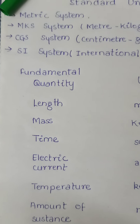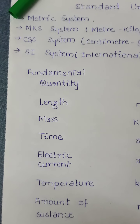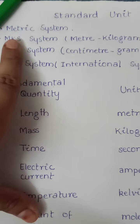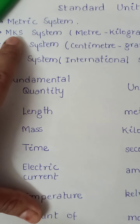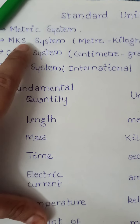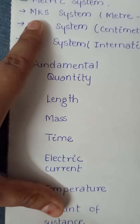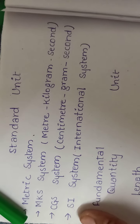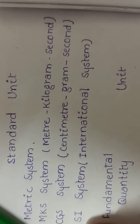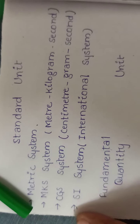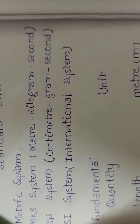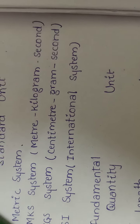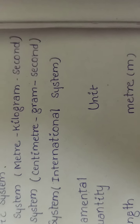Another system is the MKS and CGS system. In MKS: M stands for meter, K stands for kilogram, and S stands for second. In the case of CGS: C stands for centimeter, G stands for gram, and S stands for second.